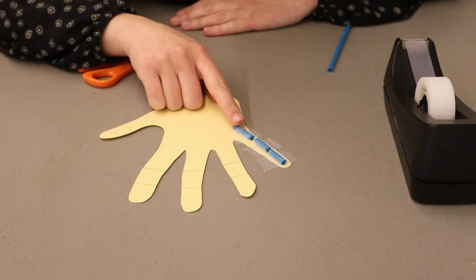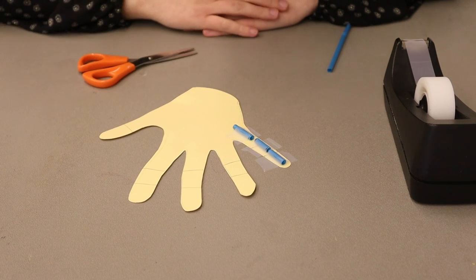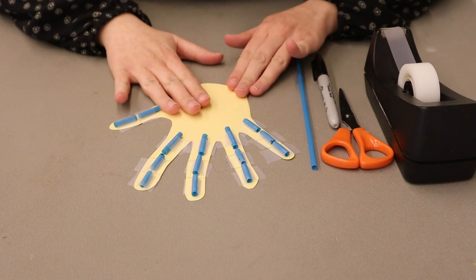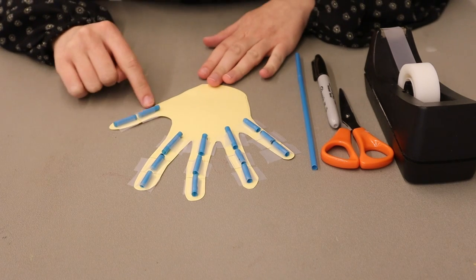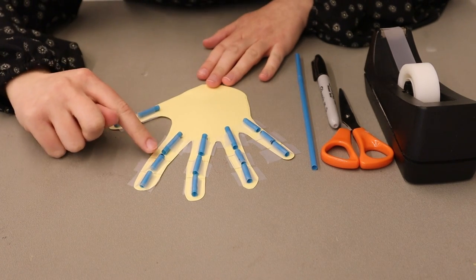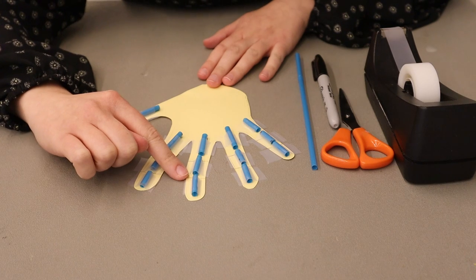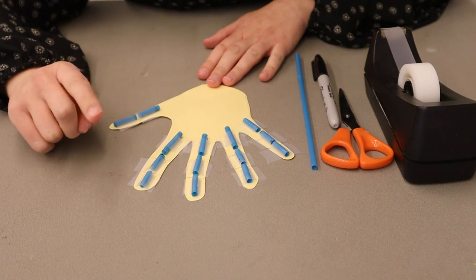And we want to align the bones together just like that. So we're going to repeat this process for all of our fingers. As you can see, all of our fingers now have three bones and our thumb has two bones. In between each bone, there is a space to allow our fingers to bend.